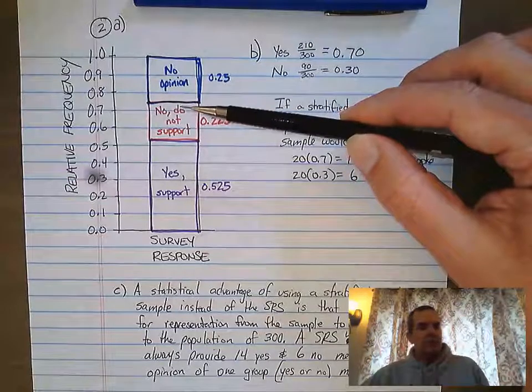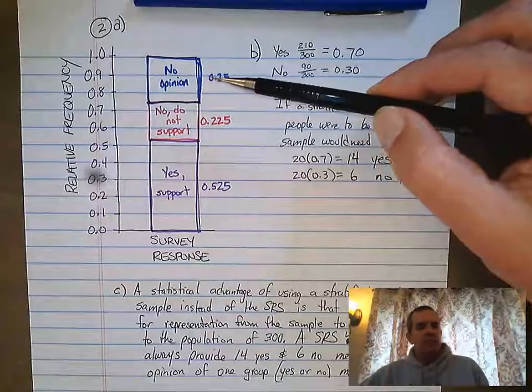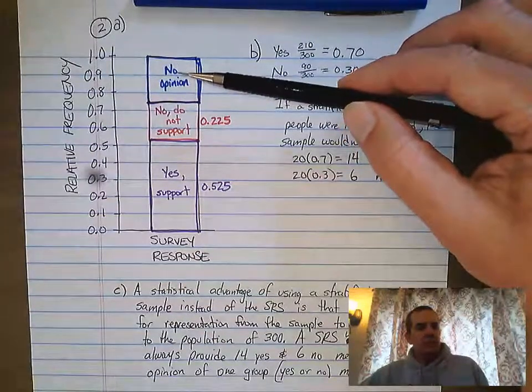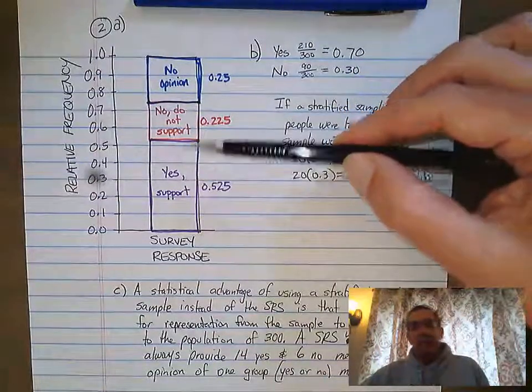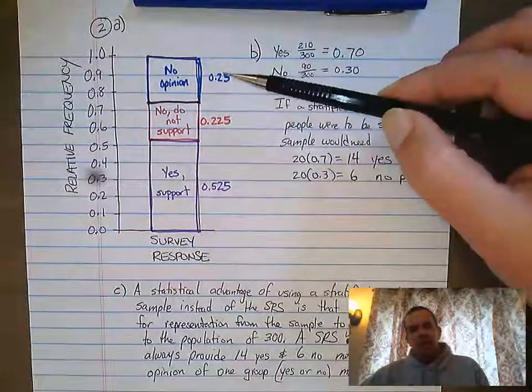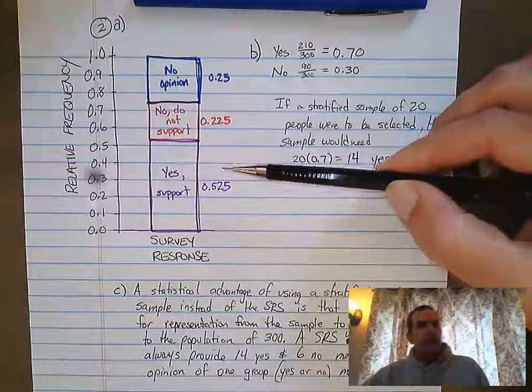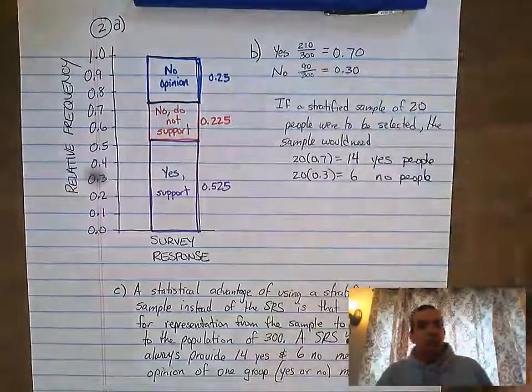Adding 22.5% brings us up to 75%. The final group, 100 people with no opinion, is about 25%. What you really needed to do is make sure the bars were proportionately filled in and labeled. The numbers are nice to put down as a double check, but they should be stacked up like this. That would be your answer for part A.